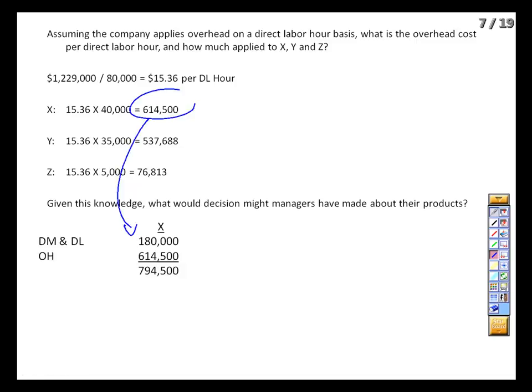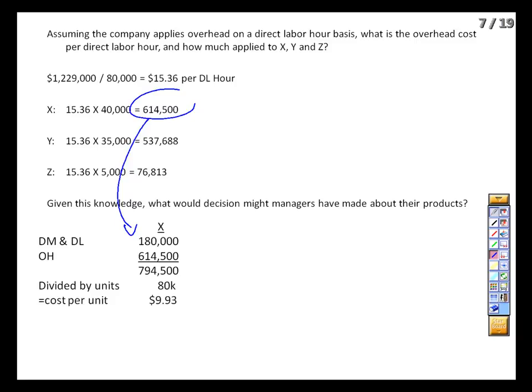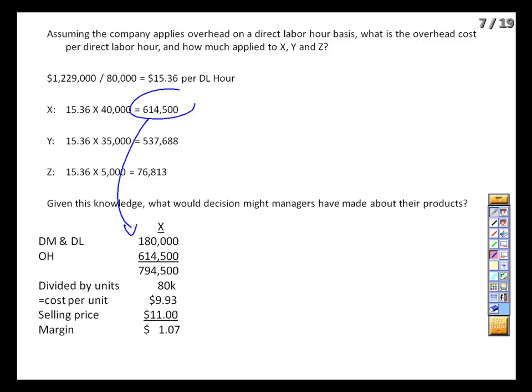So to produce Product X, it's costing us a total of $794,500. We're making 80,000 units, so our per-unit cost is just under $10. We're selling them for $11 a pop, giving us $1.07 in profit, or about a 10% margin — not too shabby.